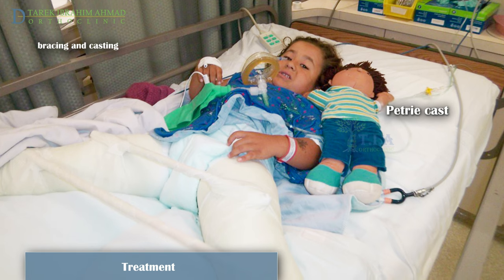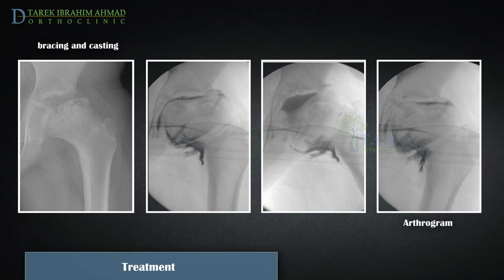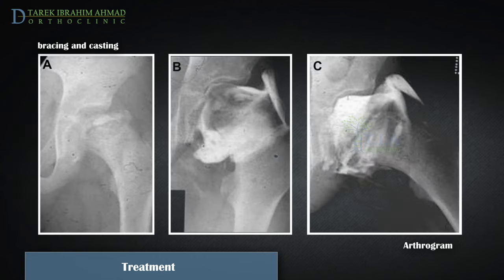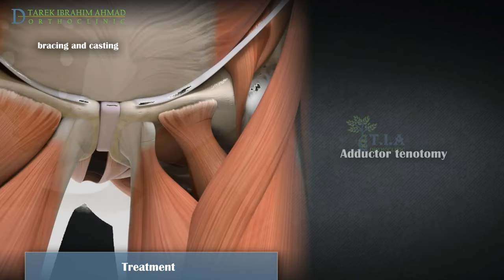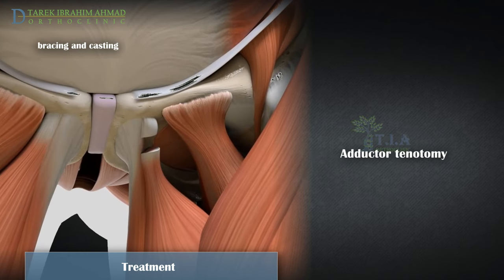The doctor will most likely apply the initial Petri cast in an operating room. During application, a series of special x-ray images called arthrograms are taken to assess the degree of deformity of the femoral head and ensure accurate positioning. In an arthrogram, a small amount of dye is injected into the hip joint. In some cases, the adductor longus muscle in the groin is very tight and prevents the hip from rotating into the proper position.